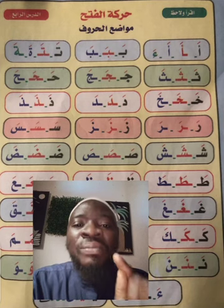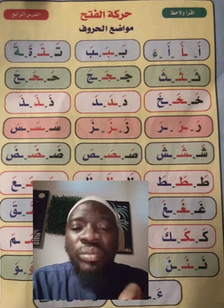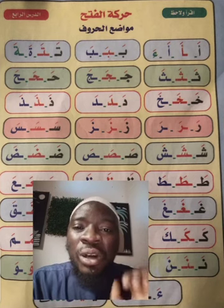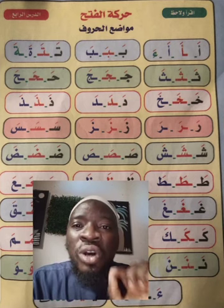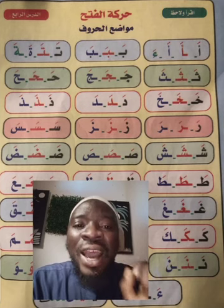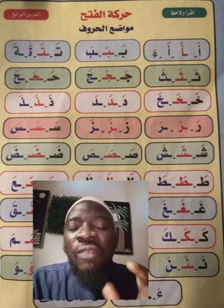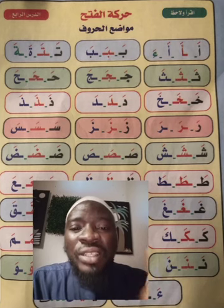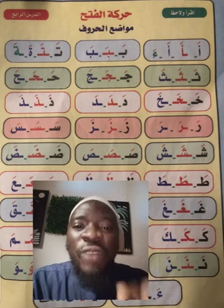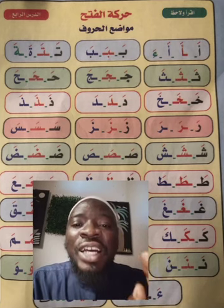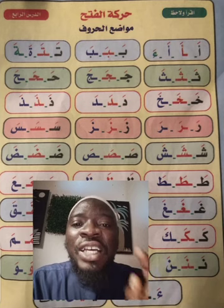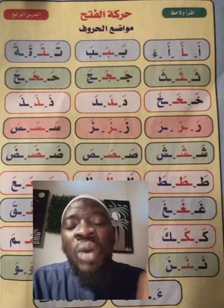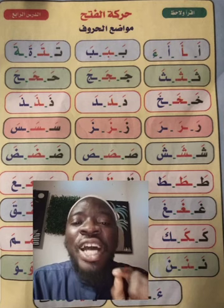Then you have the letter Jim. From Ba, you can see that Ba has a dot under, Ta has two dots above, Tha has three dots above. Then for Jim, it has one dot under. You can see the letter Jim — Jim with Fathah, we sound JA, JA, JA. You can see Jim at the beginning, at the middle, and at the end.